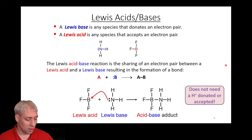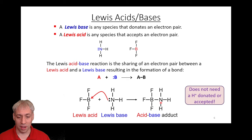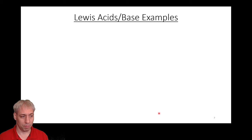One important thing to note about the Lewis acid-base definition — unlike Bronsted-Lowry — is that no protons are involved. Protons don't have to be accepted or donated; that's the Bronsted-Lowry definition from chapter 14. In Lewis acid-base chemistry, we're talking about electron donation and electron accepting — Lewis base and Lewis acid.